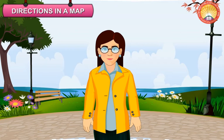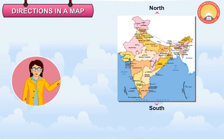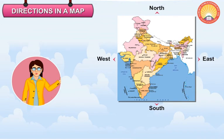Directions in a map. If you look at the map on a wall, its top indicates the north, its bottom shows the south, its right side shows the east, and its left side indicates the west. All maps have the same way to show the directions. The directions help us to locate things in a town or in a country.